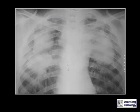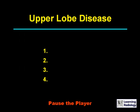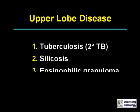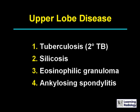This is the next differential: upper lobe disease. There are four possible causes: tuberculosis, silicosis, eosinophilic granuloma, and ankylosing spondylitis.